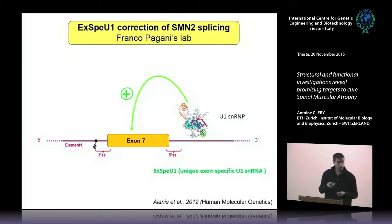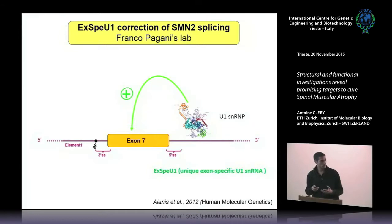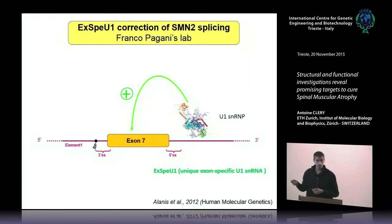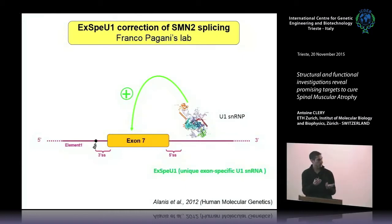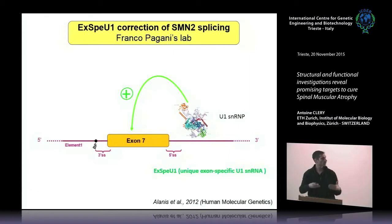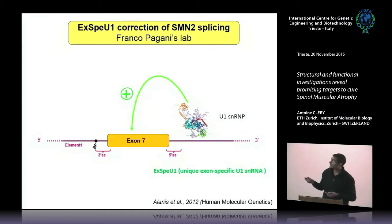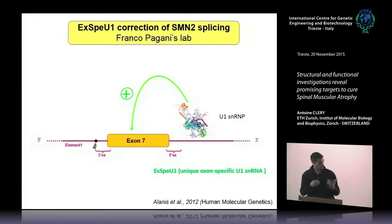Another strategy developed in Franco-Paganis's lab here was to promote recruitment of the spliceosome — the machinery responsible for the splicing reaction — close to exon 7 to promote its inclusion. For this, they engineered a U1 snRNP. The U1 snRNP is part of the spliceosome and is the first component that must bind the pre-mRNA to promote assembly of the rest of the spliceosome. They engineered this U1 snRNP to have higher affinity for intron 7 than the endogenous U1 snRNP, and they were successful in promoting exon 7 inclusion.